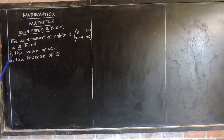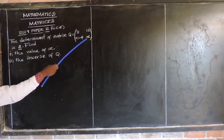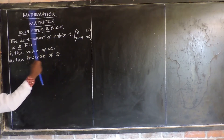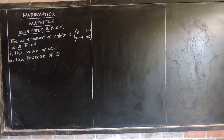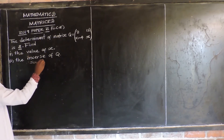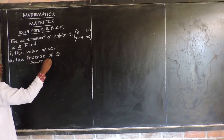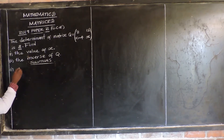They want us to find — Roman numeral 1 — the value of X. Since you have been given the determinant of this matrix, I'm going to apply the formula for finding the determinant. So the determinant of Q is equal to — they want us to find the value of X for which the determinant of matrix Q is 8.